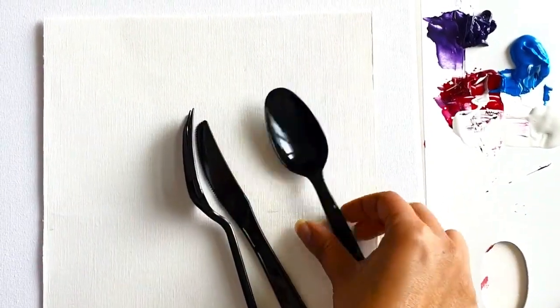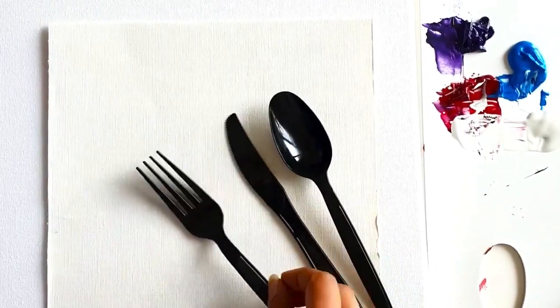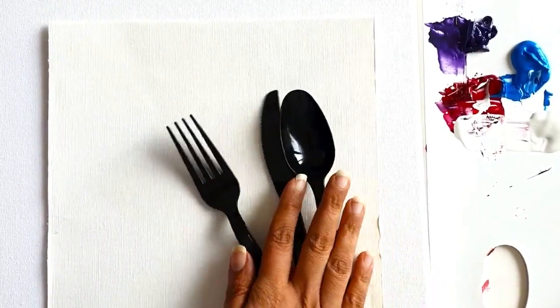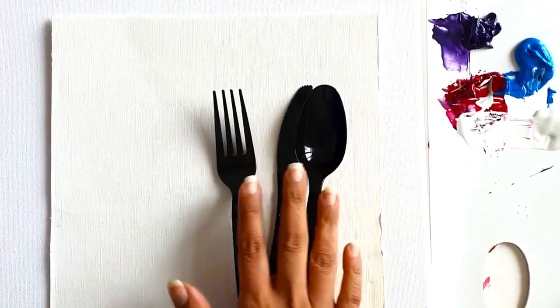Hey kids, so today I'm going to show you how to do some of the textures I showed you in the previous video with the palette knives, but how to do them using things that you have at home. So these are plastic utensils and we're going to try and use this with acrylic paints to create some of the textures that we saw in the previous video.